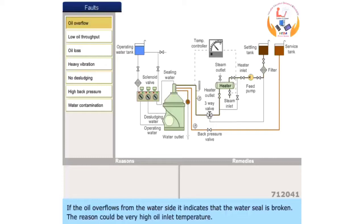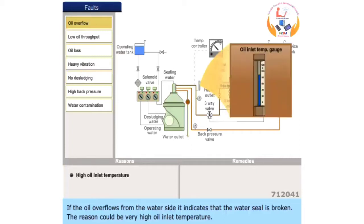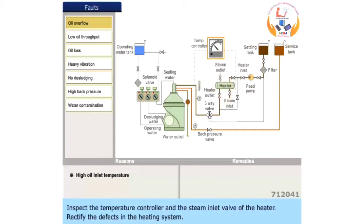If the oil overflows from the water side, it indicates that the water seal is broken. The reason could be very high oil inlet temperature. Inspect the temperature controller and the steam inlet valve of the heater. Rectify the defects in the heating system.